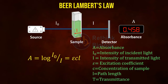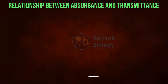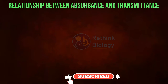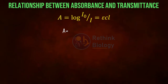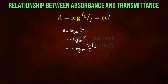Transmittance (T) is expressed by the ratio of I to I₀. If we derive the relationship of absorbance with percent transmittance from the above formula, we get: Absorbance = 2 − log₁₀(%T).